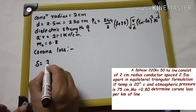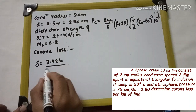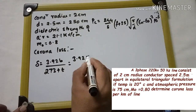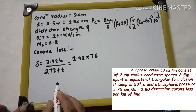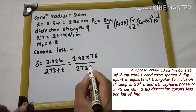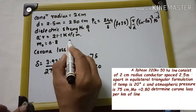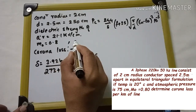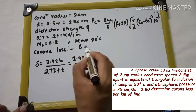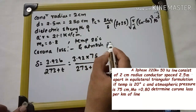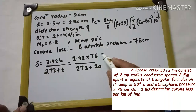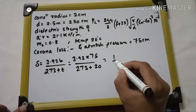First, we find δ (air density factor): δ = 3.92 × b / (273 + t) = 3.92 × 75 / (273 + 20). Temperature is 20°C and atmospheric pressure is 75 cm. After solving, we get δ = 1.